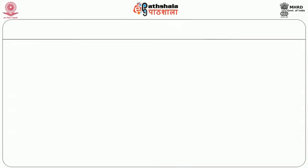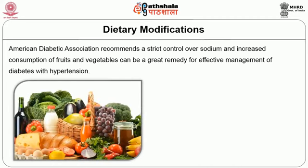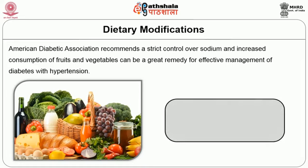Moving on to dietary modifications: the American Diabetic Association recommends strict control over sodium and increased consumption of fruits and vegetables, which can be a great remedy for effective management of diabetes with hypertension. The important dietary principles need to be focused on energy, dietary fat, protein, and sodium.